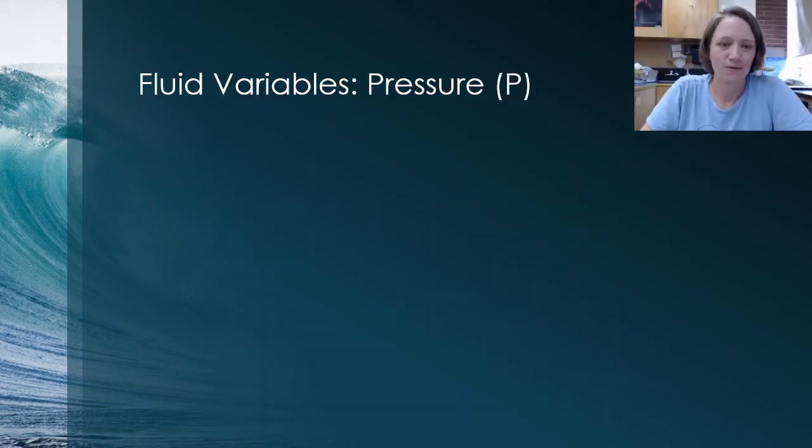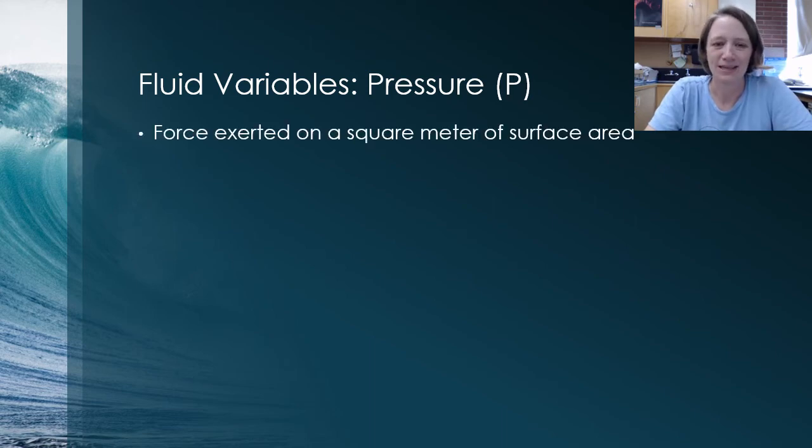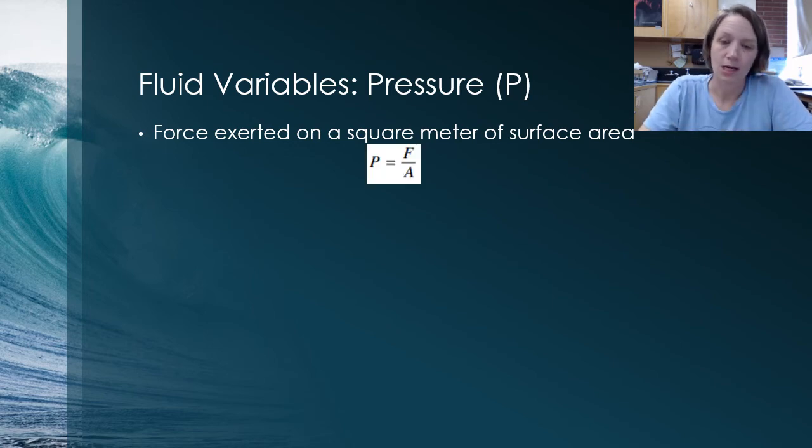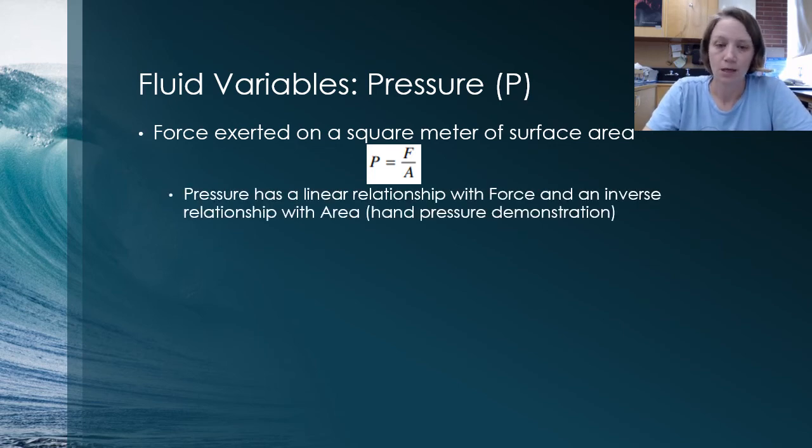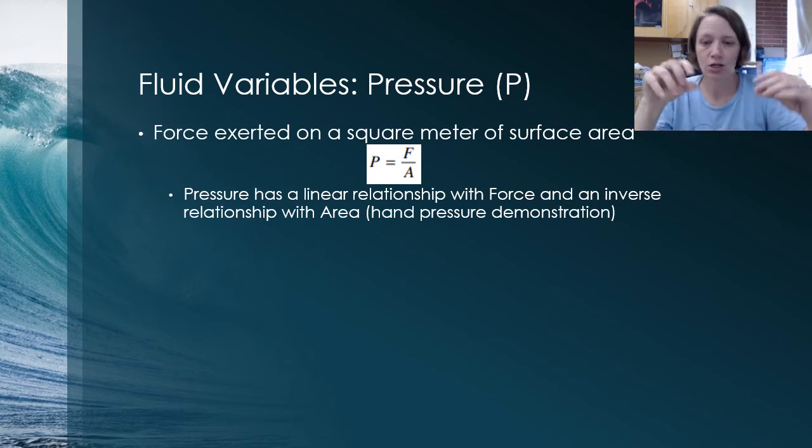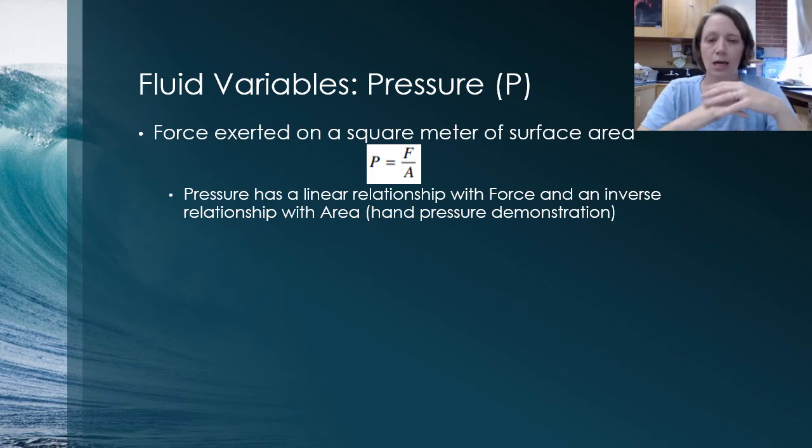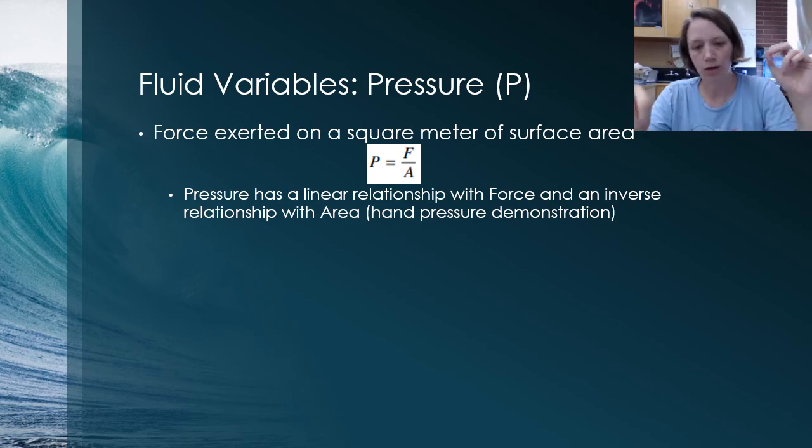So the third fluid variable that we want to define is pressure, which is represented with a capital uppercase P. Pressure is defined as the amount of force that is exerted on a square meter of surface area. And the equation that comes out of that definition is pressure is equal to F over A. That equation shows that we have a linear relationship between pressure and force. So the higher the force, the higher the pressure and an inverse relationship with area and pressure. So the lower the area, the higher the pressure.